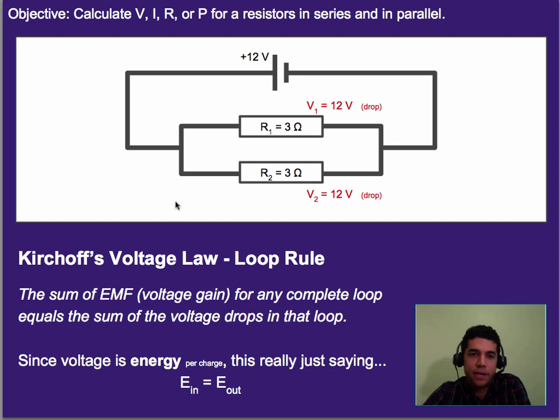Alright, so to sum that up, that is actually Kirchhoff's voltage law, or often known as the loop rule, because it looks at how much voltage there is in a loop, and basically since the energy is, we're talking about energy, the energy input has to equal the energy output. So, in this case, formally, Kirchhoff's voltage law is the following. The sum of EMF, or in other words, voltage gain, in other words, from the battery, for any complete loop through a circuit equals the sum of voltage drops in that same loop.